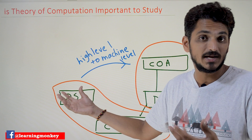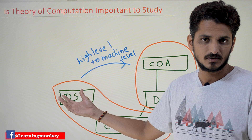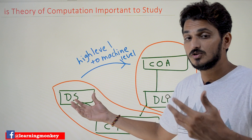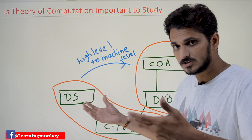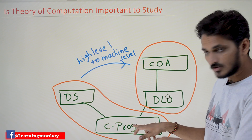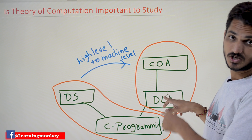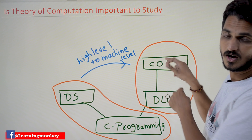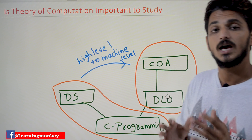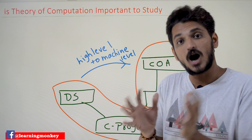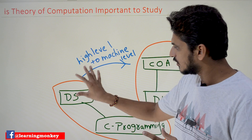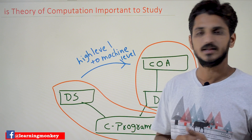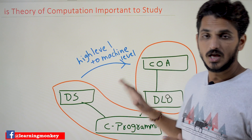The second package a computer science student has to study is Digital Logic Design and Computer Organization and Architecture, to improve deeper understanding of the hardware side. Now, only coding knowledge is not enough — hardware side knowledge is also necessary. This is another package.